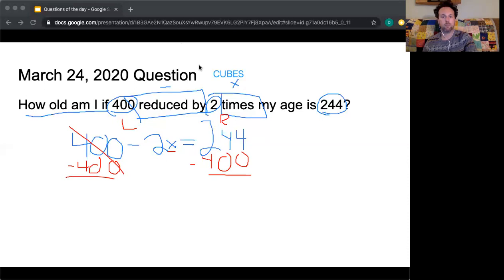So 400 minus 400 is zero. I'm going to bring down my negative 2x equals, and then since I have positive 244, negative 400, I'm going to subtract. Same signs add and keep, different signs subtract, keep the sign of the bigger number. I know that since 400 is bigger than 244, my answer is going to be negative. So 400 minus 244 is 156, and since my 400 is bigger, my answer is actually negative 156.